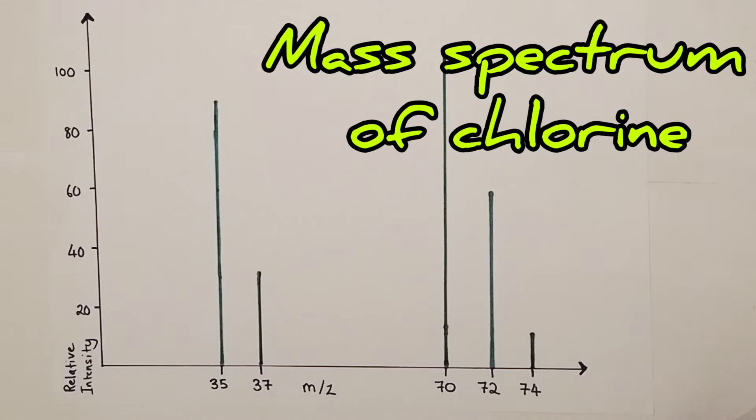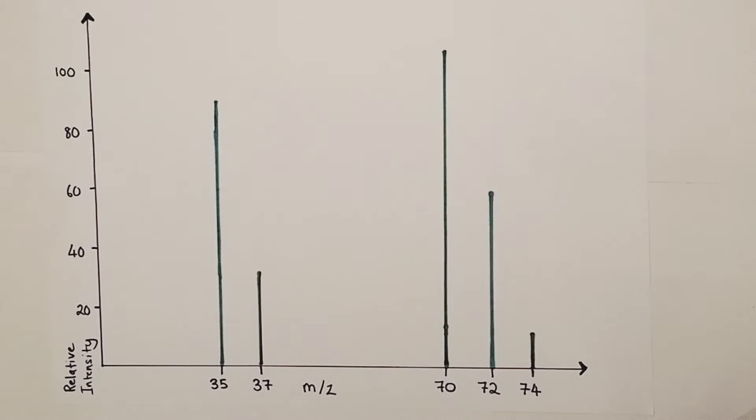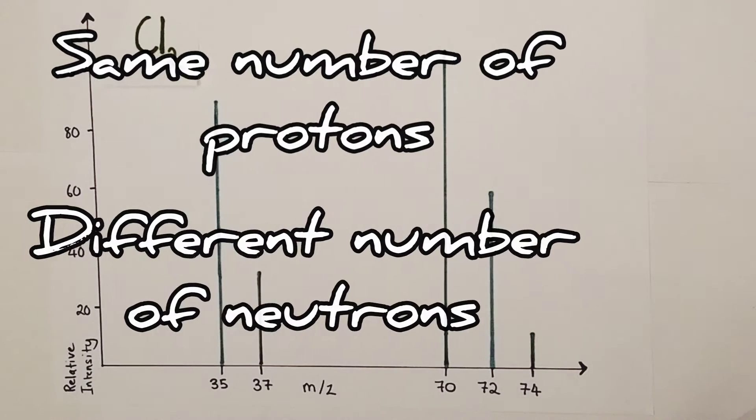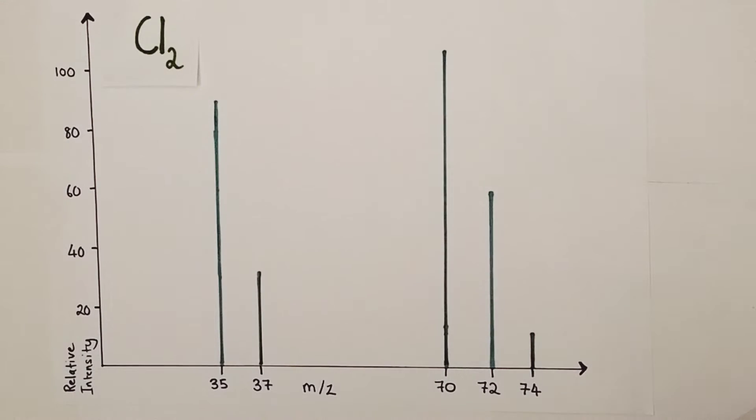The first thing to remember about chlorine is it's a diatomic molecule with the formula Cl2. The second thing to remember about chlorine is that there are two different isotopes of chlorine naturally occurring on planet Earth. Isotopes are atoms of elements that have the same number of protons but a different number of neutrons, having the same atomic number but a different mass number.